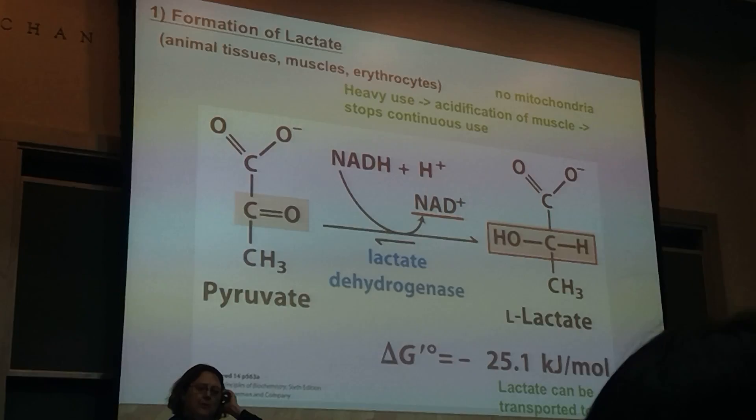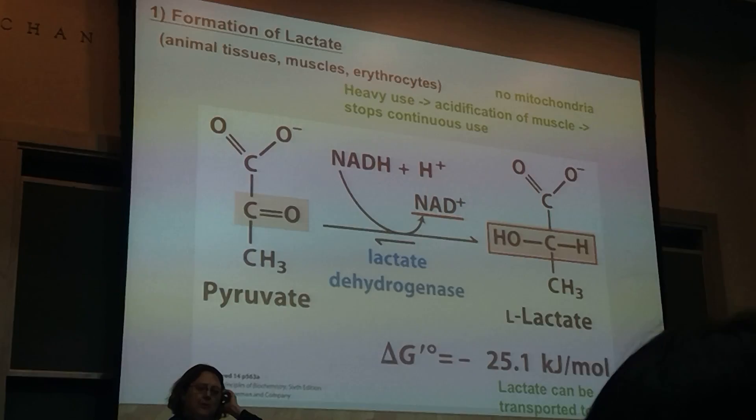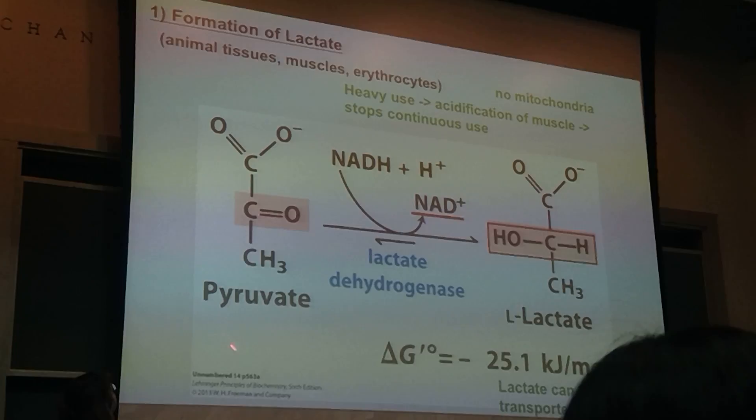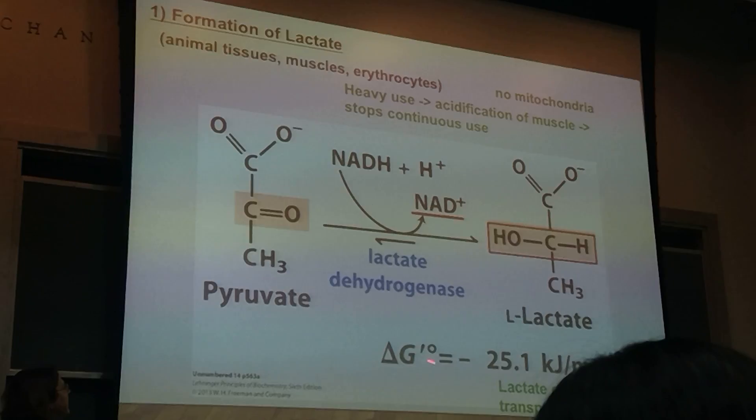Formation of lactate happens in foods and animal tissues like muscles and erythrocytes, and it's usually under heavy use. You'll have this conversion of pyruvate in an NADH-dependent reaction to get lactate — this is the dehydrogenase, as you can see. It has a nice irreversible delta G of minus 25 kJ/mol.